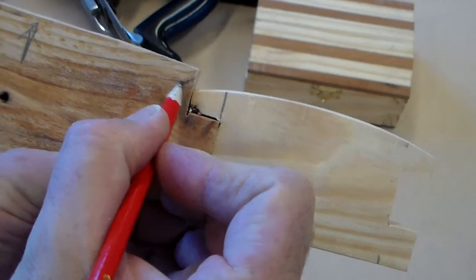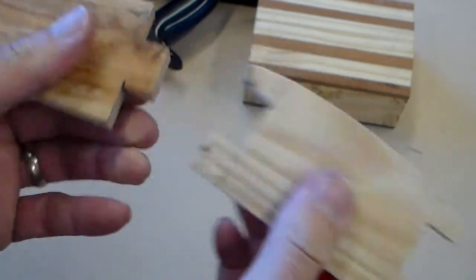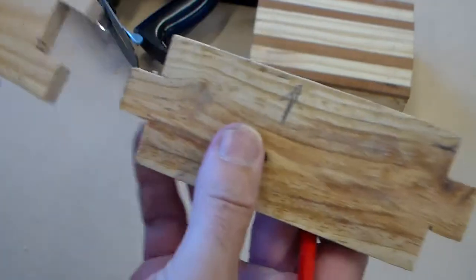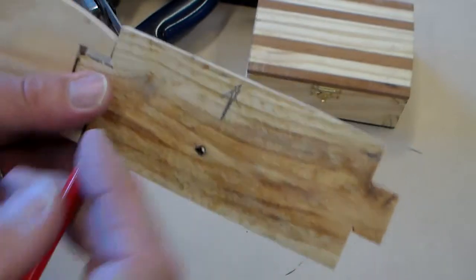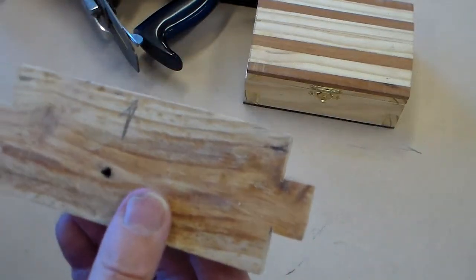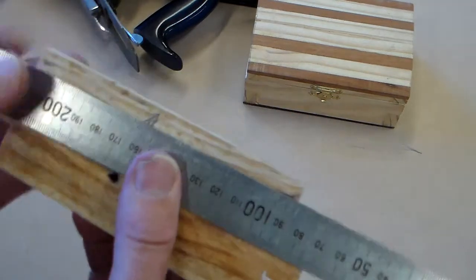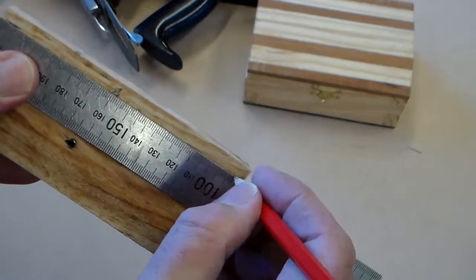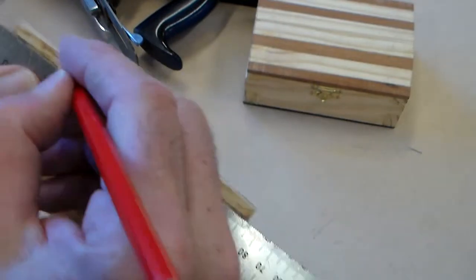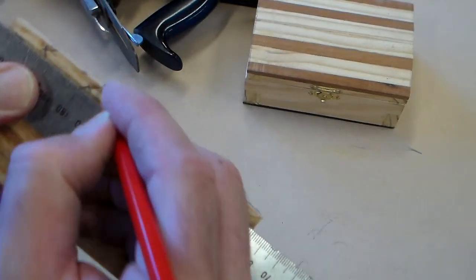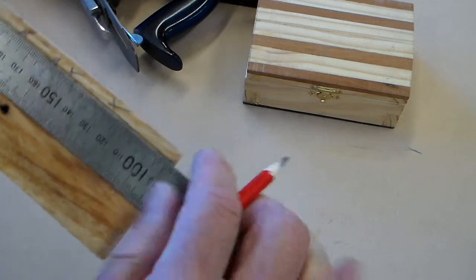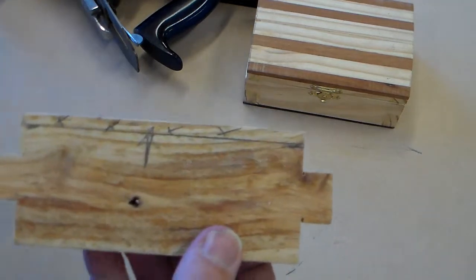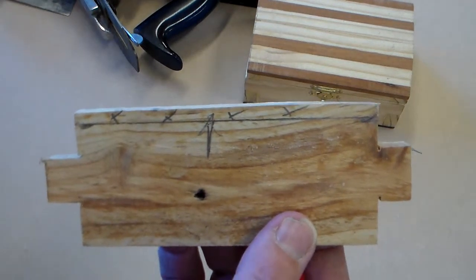So the first thing we do is mark it with a pencil here and on the other end and use a steel ruler to line that up and again draw our line. Then if you like you can mark x's across to show that's the material we've got to remove.